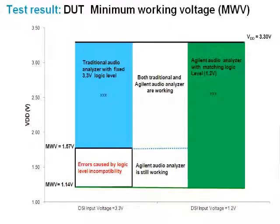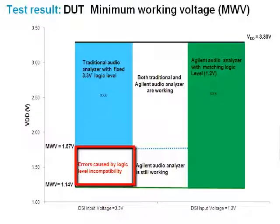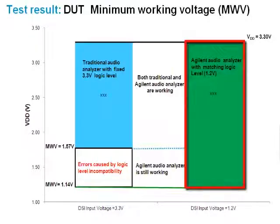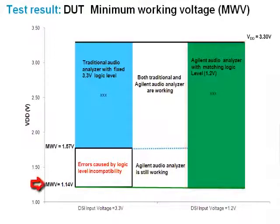As a matter of fact, the DUT is still working, but the audio analyzer cannot interpret the logic correctly with a fixed 3.3V logic level. As the DUT voltage gets lower, the DUT's logic level will decrease as well, and if the audio analyzer is not able to read or interpret the lower logic level, this will cause test errors due to incompatibility. Thus, by lowering the logic level to 1.2V to match the DUT's output in scenario 2, you are able to measure the true minimum working voltage.